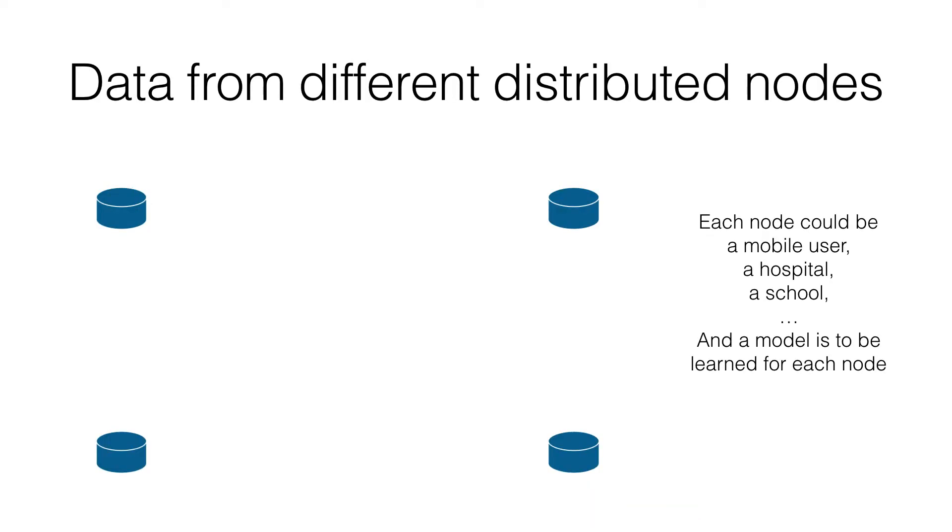Let's consider a natural setting in machine learning where we have data coming from different sources or nodes. Each source could be a mobile user, a hospital, or a school, and these nodes are physically apart.